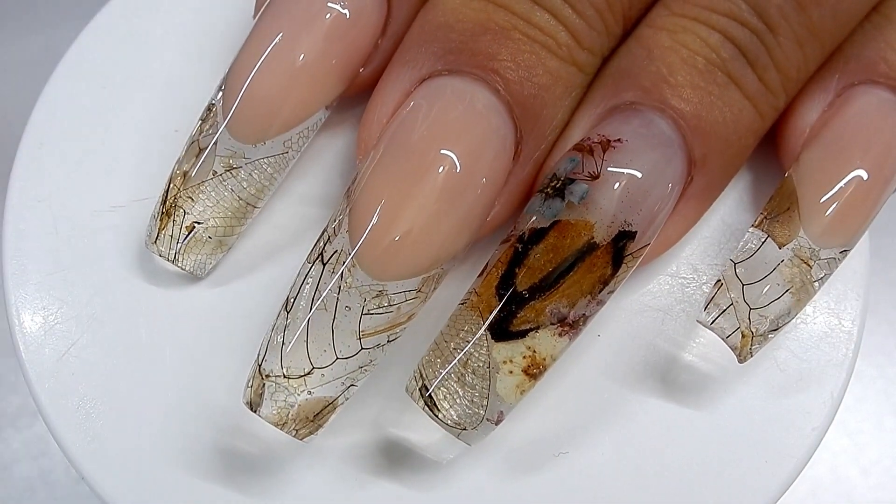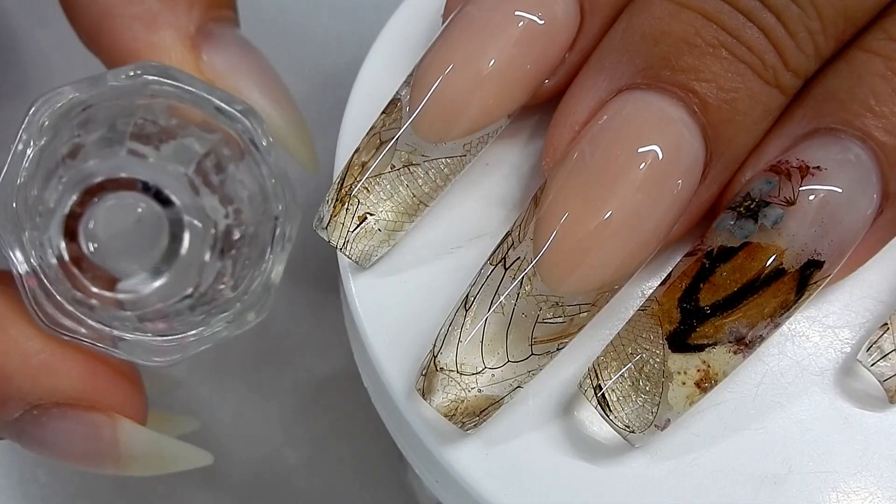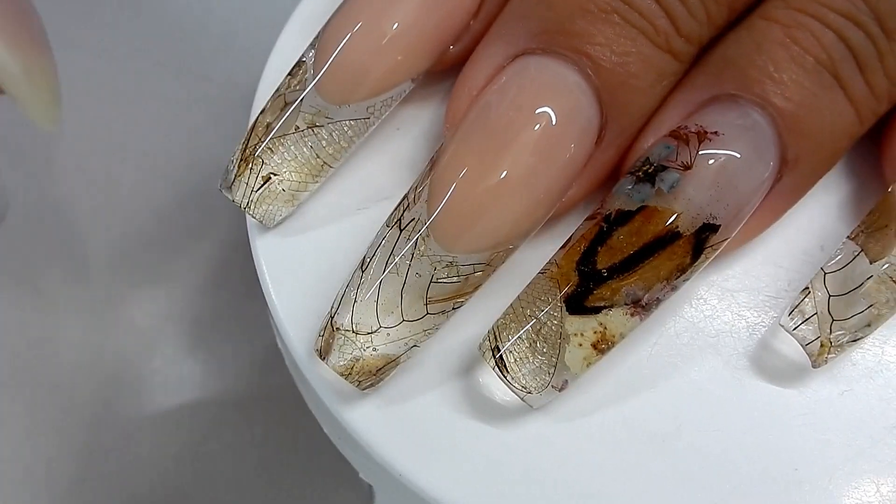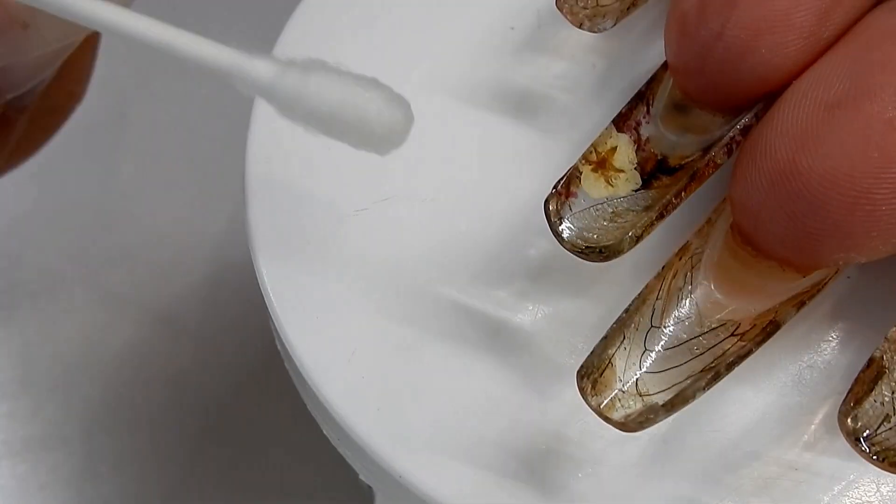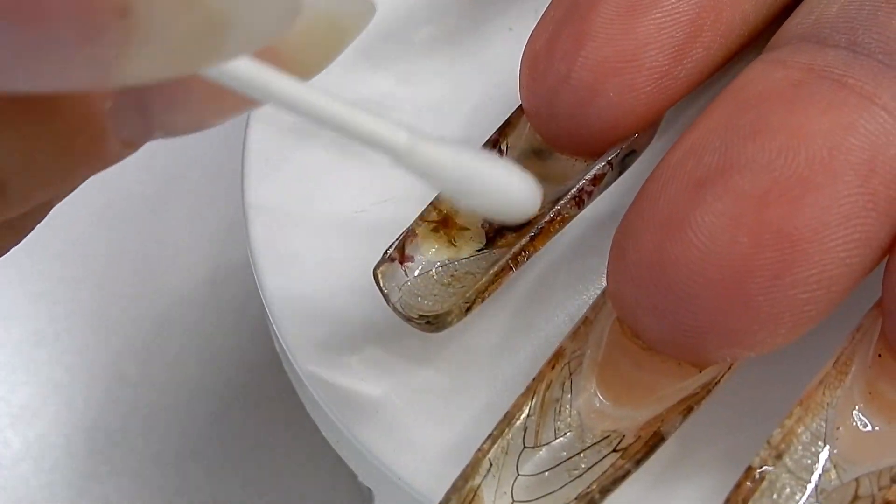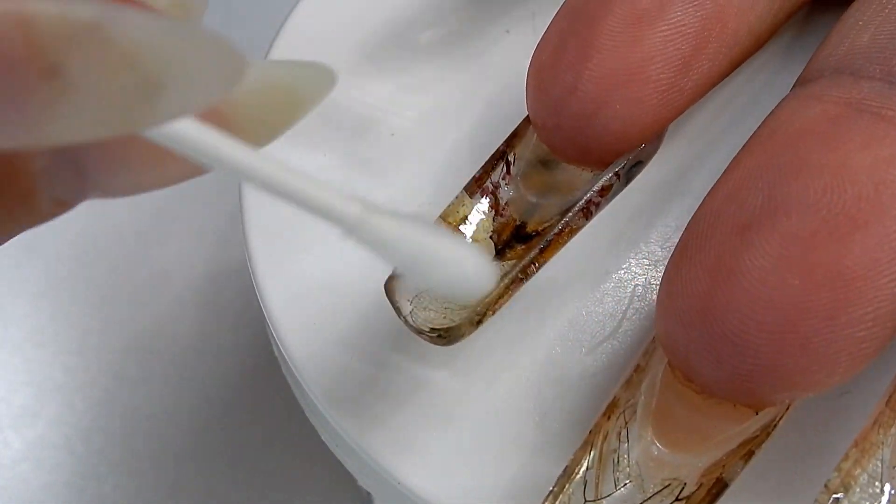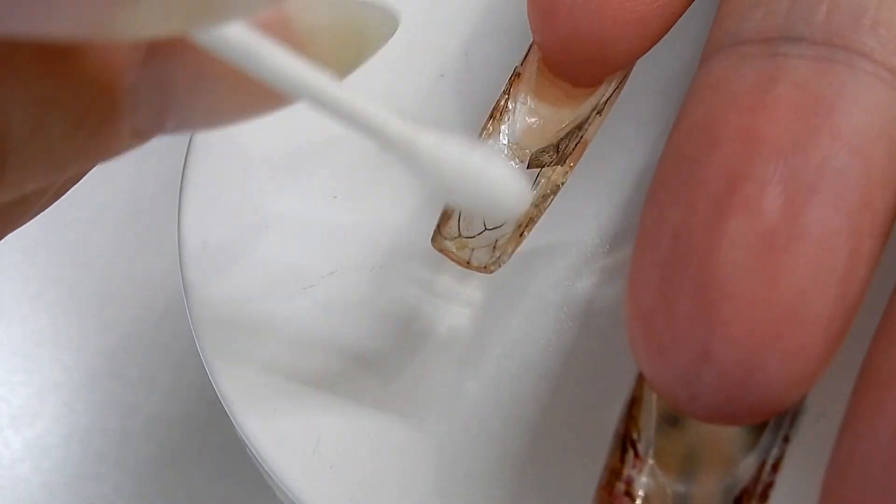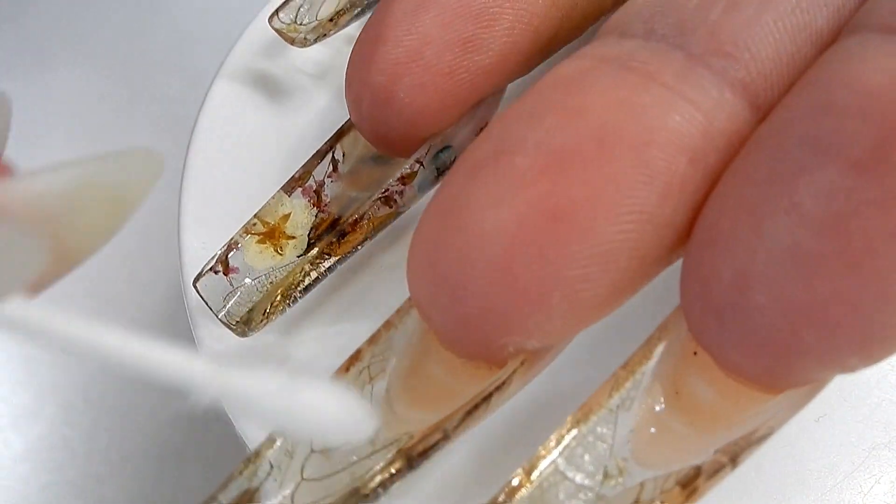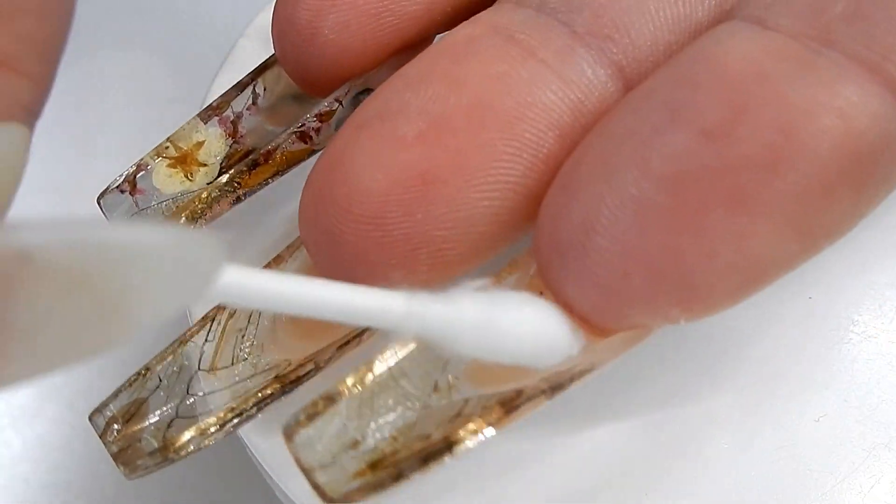And for clear nails like these, I always like to top coat underneath the nail here. The reason that I do that is because it gives you even more clarity. Before I top coat the underside of the nail, I take a dappen dish full of isopropyl alcohol, take a Q-tip and dip it in the alcohol. And I clean the underside of the nails really well because you want to remove any kind of dust or oils from underneath that nail so that the top coat will adhere.